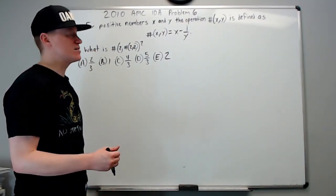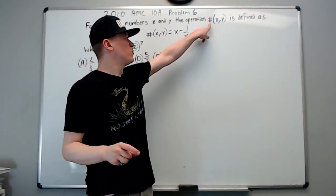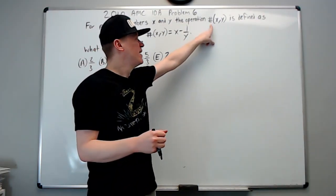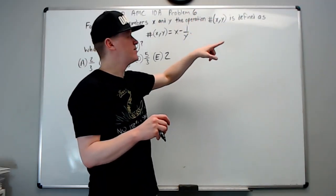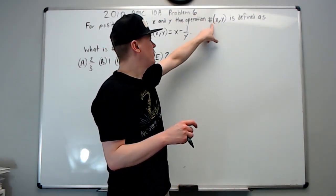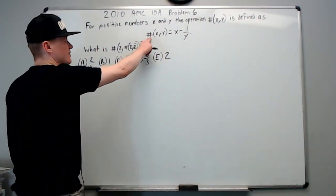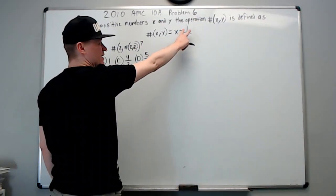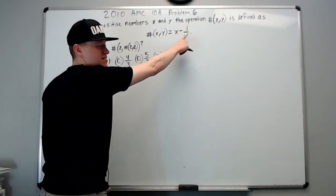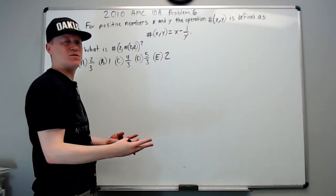Here we go. For positive numbers x and y, the operation—the original symbol they use is a spade from a deck of cards, but I'm not going to draw a spade, so we're using the hashtag or number symbol—symbol of x comma y is defined as x minus 1 over y. You should see this as x minus the reciprocal of y. It's good to think about things in different ways; it might provide some speed in calculation ability later on.